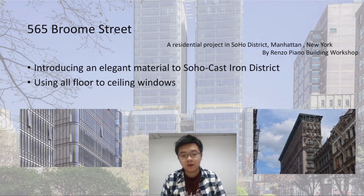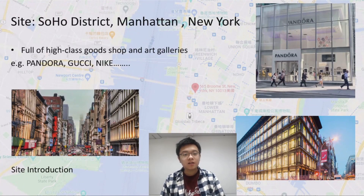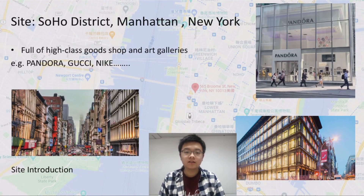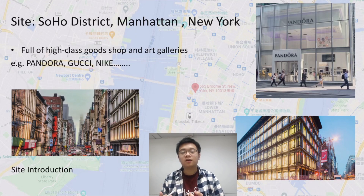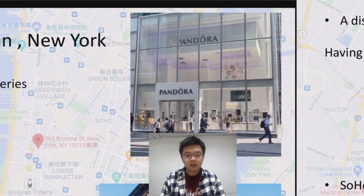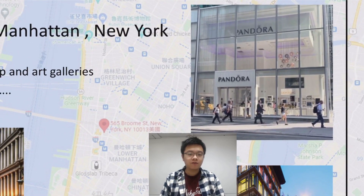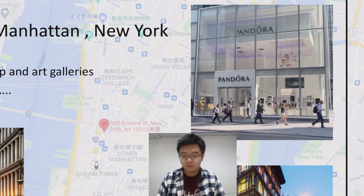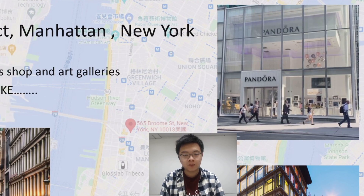Let's start with the site introduction. The site is located in Manhattan, New York — the SoHo District. This is a district full of high-class goods shops and art galleries. There are lots of headquarters of luxury brands such as Pandora, Gucci, and Nike. As you can see in the picture, there are lots of big shops and famous names around the street, and the experience is really expensive because those luxury goods are really high-priced.